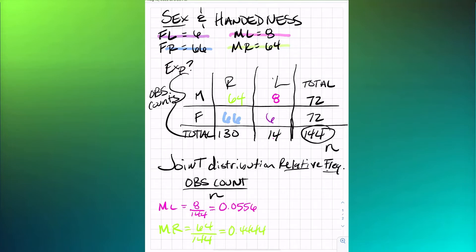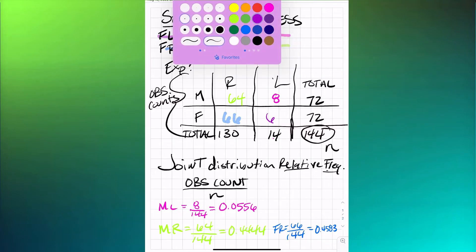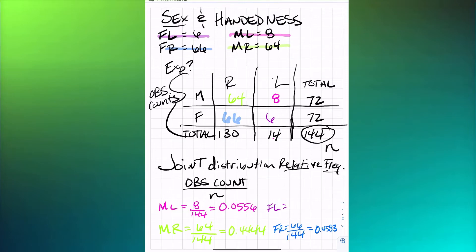For females who are right-handed, we have 66 over 144. For females who are left-handed, we have 6 over 144. When you add up all four joint distribution relative frequencies — all four cells of the contingency table — they should total to 1.